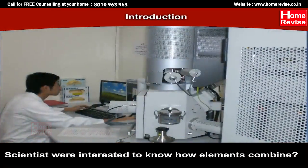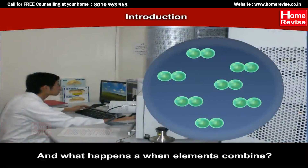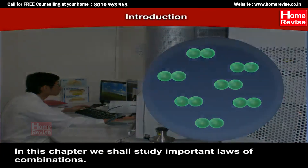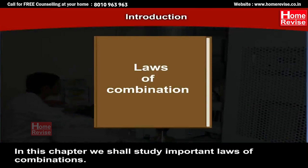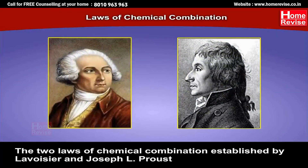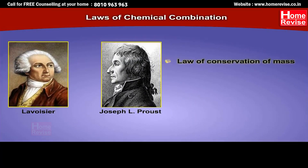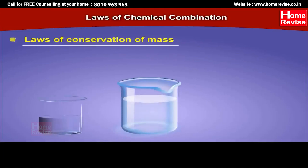Scientists were interested to know how exactly these elements combine and what happens when elements combine. So in this chapter we shall study important laws of chemical combination. The two laws of chemical combination established by Lavoisier and Joseph L. Proust are: the law of conservation of mass, and the law of constant proportion.